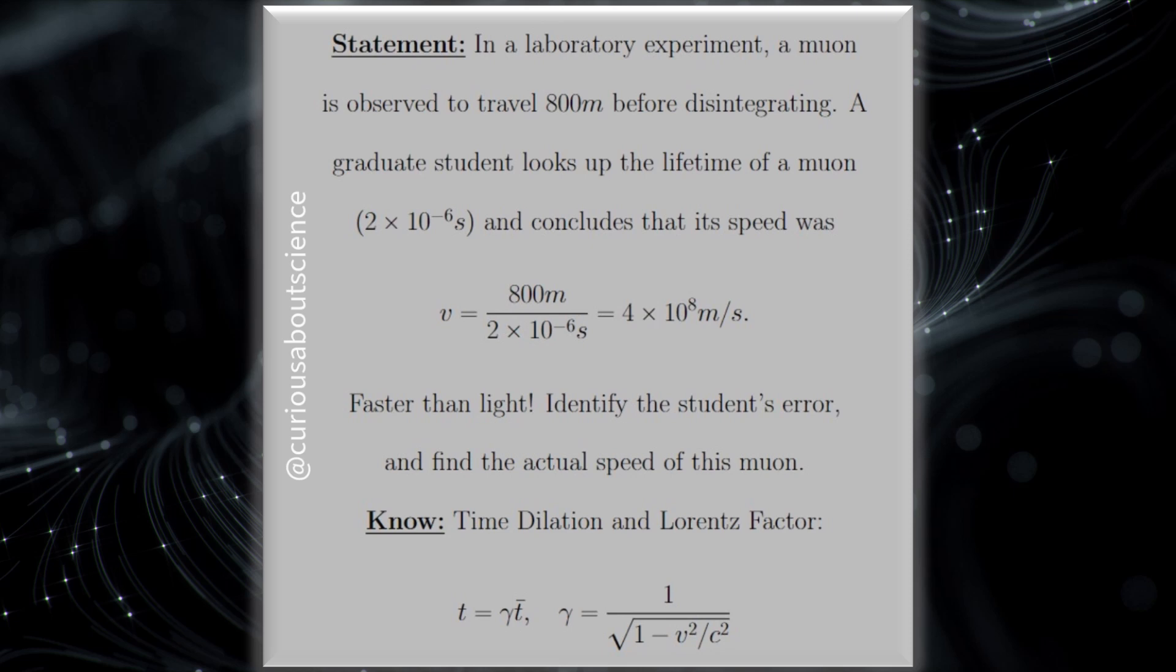In this case, let's start off with, in a laboratory experiment, a muon is observed to travel 800 meters before disintegrating. A graduate student looks up the lifetime of a muon, 2 times 10 to the negative 6 seconds, and concludes that the speed is V equals 800 divided by this half-life, which is equal to 4 times 10 to the 8th meters per second.